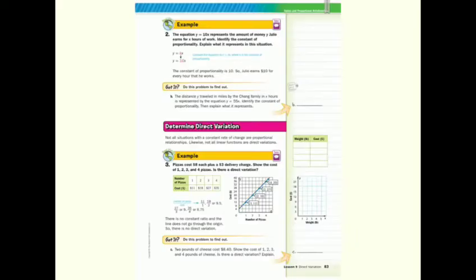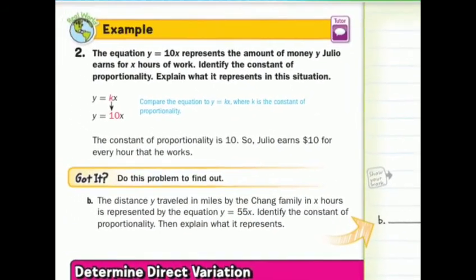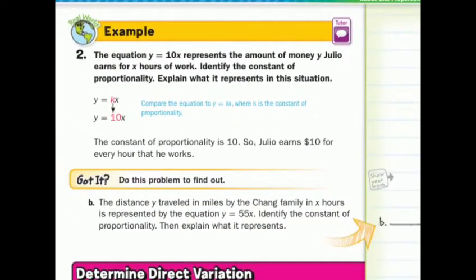In guided example 2, the equation y equals 10x represents the amount of money y Julio earns for x hours of work. Identify the constant of proportionality. Explain what it represents in this situation. Well, our direct variation equation is y equals kx, where k is the constant of variation or constant of proportionality. Well, if we're given the equation y equals 10x, that 10 is our constant of proportionality. What does it mean? Well, the equation represents the amount of money y that he earns for x hours. So he earns $10 for every hour that he works.